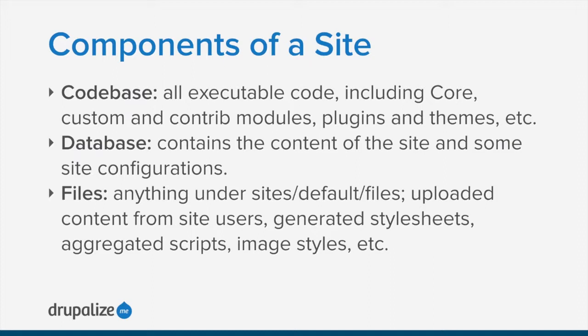Your base components of a site: you have three things needed to create a Drupal site. You have your code base, which is core, custom, and contrib — that's all the actual code, modules, and projects that you download. The database, once you start building your site, has your content and some configuration. And then you have your files folder, which is anything under sites/default/files — things you upload with a file field, image styles, generated style sheets for your theme, and so on.